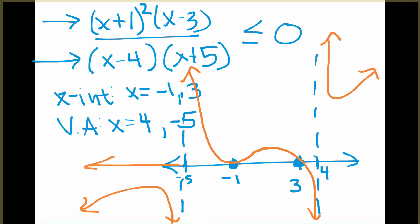So now that I have my graph, I can compare for my inequality. Notice I want it to be less than or equal to 0, which is below the x-axis. So if I start from the left, I'll trace along. This is below. So I'll include that. Then it jumps above.